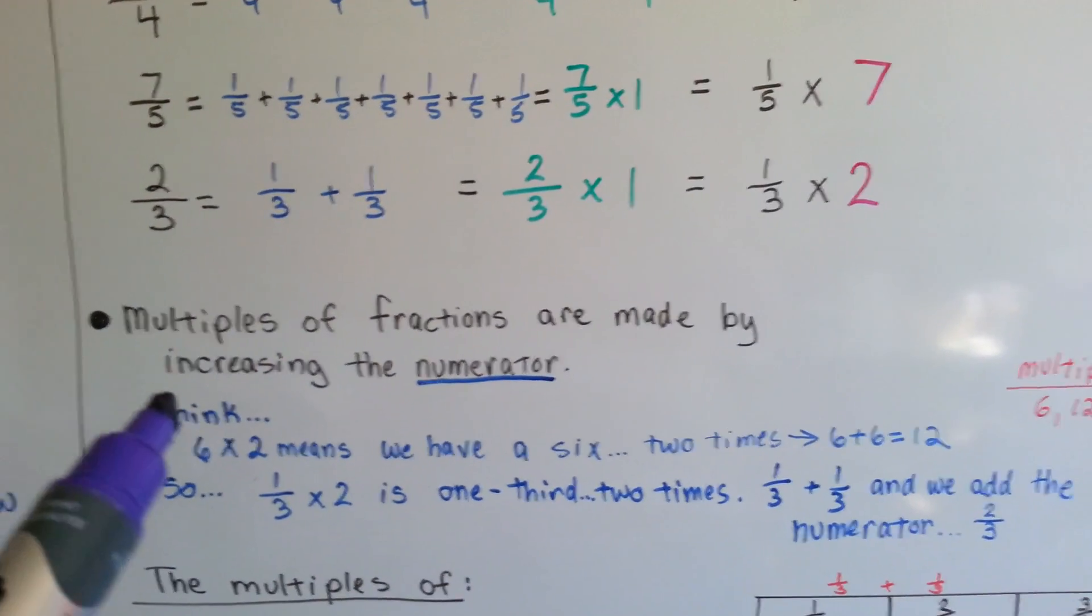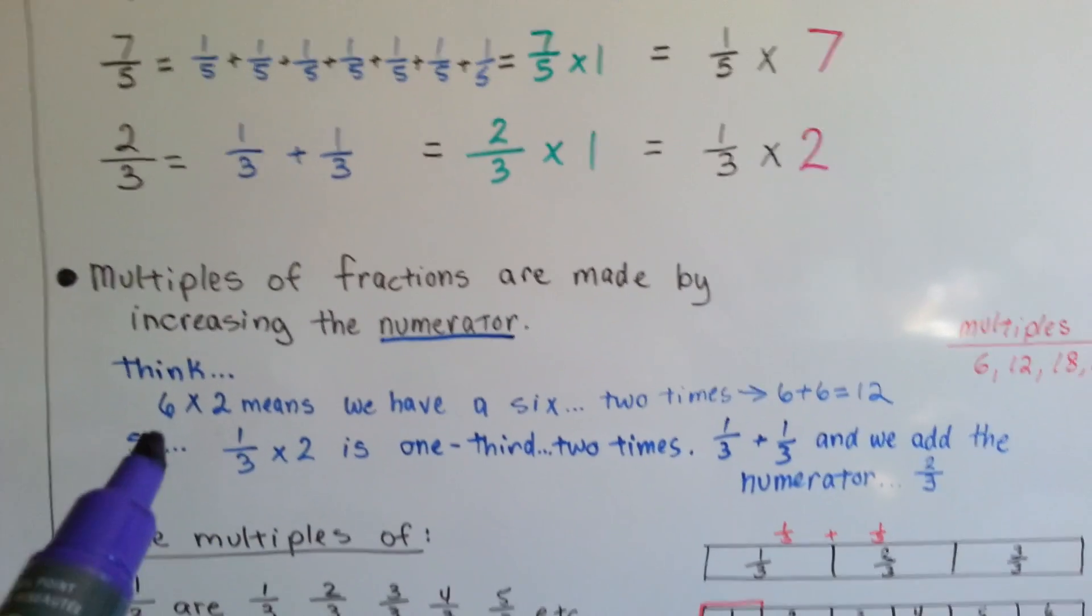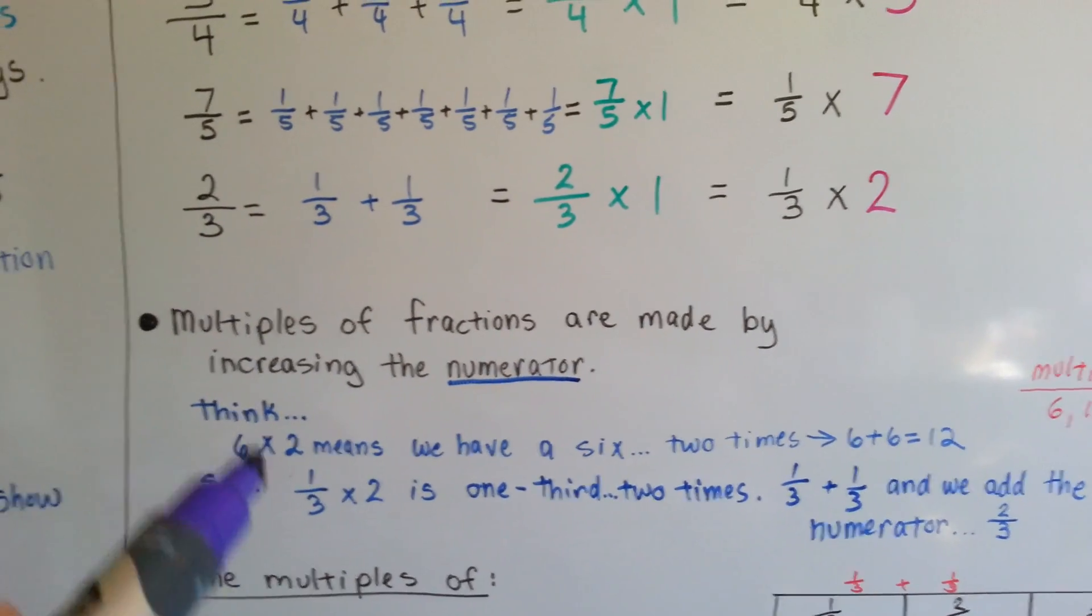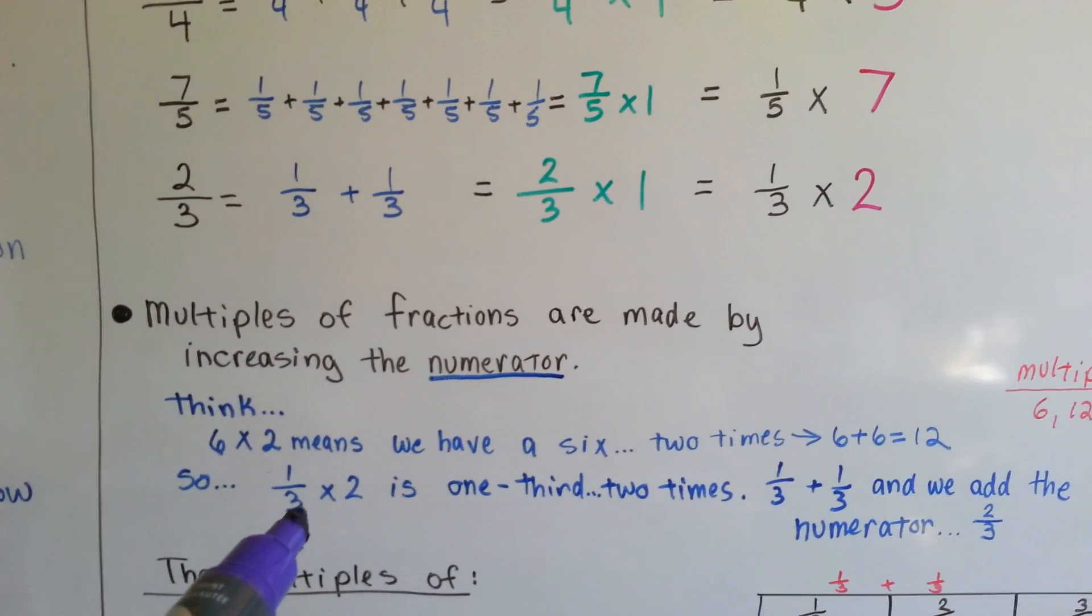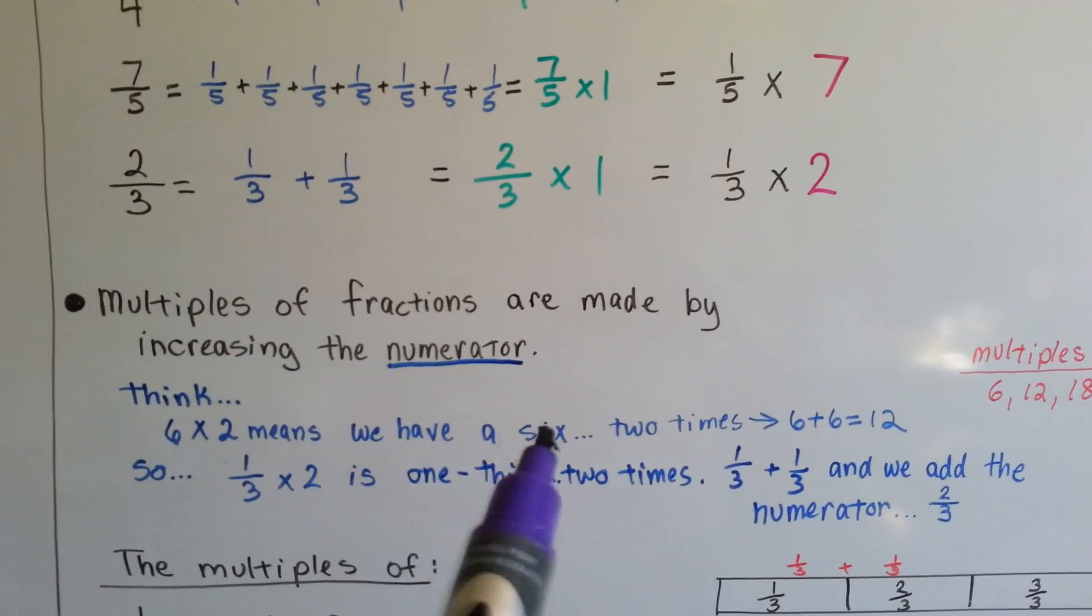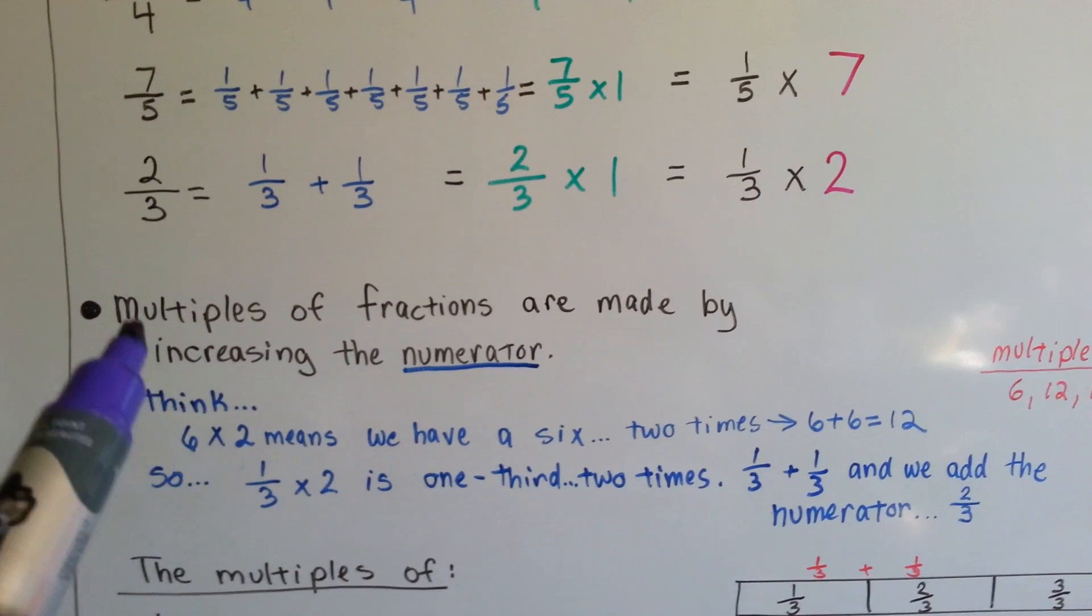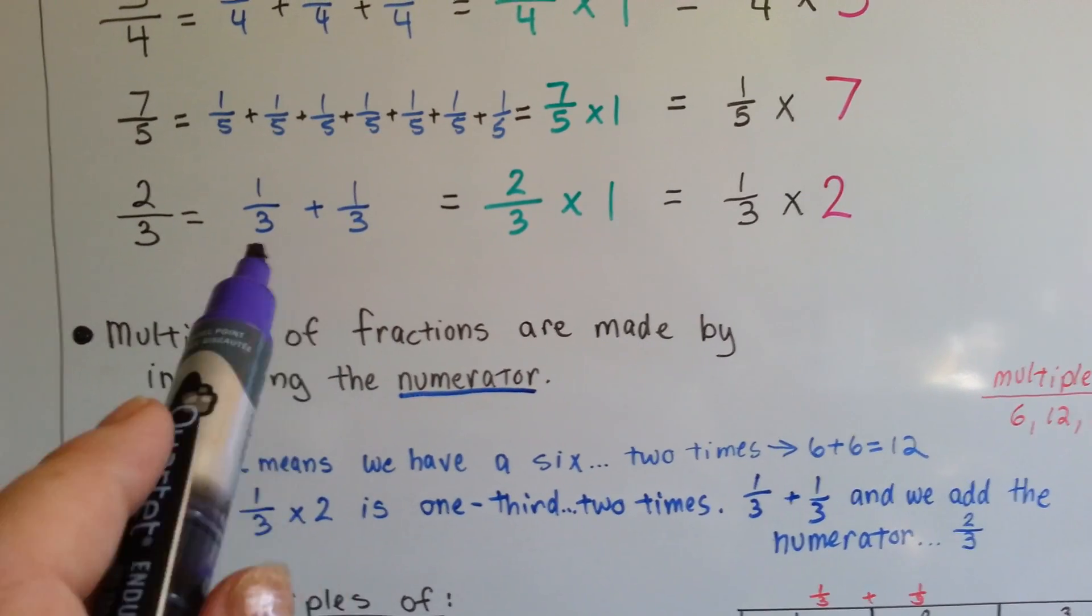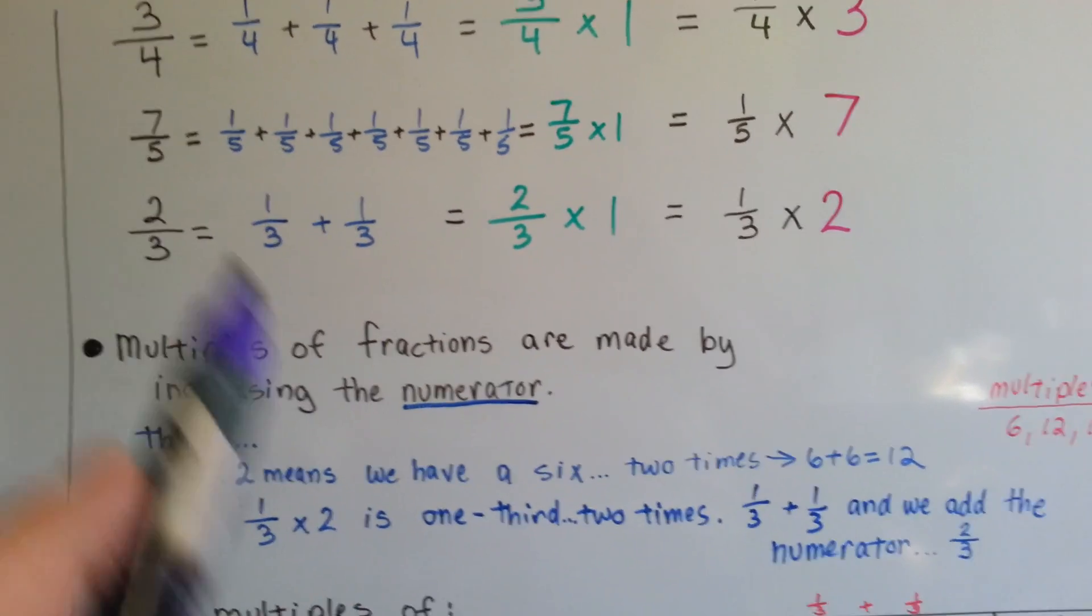So multiples of fractions are made by increasing the numerator. So I want you to think. Because I know in your brain you're like, oh, multiples. Then the 3 would be 3, 6, 9 for the denominator. I know that a lot of people are thinking because their brain wants to go that way, but don't let it. That is very wrong thinking. Multiples of fractions are made by increasing the numerator.